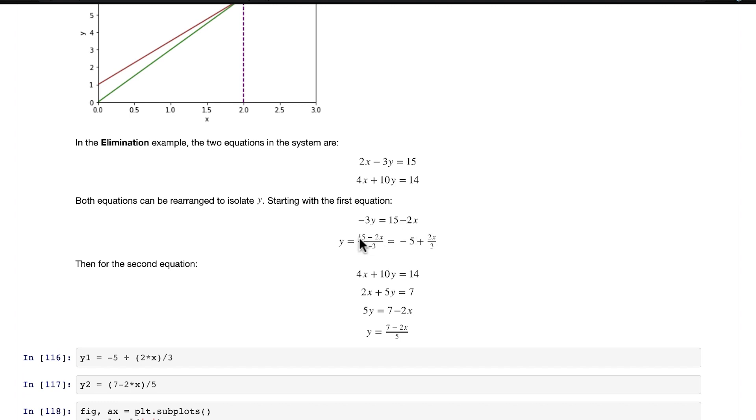On the right-hand side, we have (15 - 2x) / -3. We can simplify that a little bit. Dividing 15 by -3 is -5, and then our other term on the right is +2x/3. So that's the first equation now isolated for y.